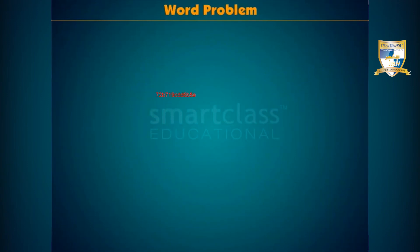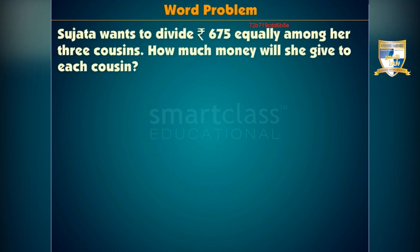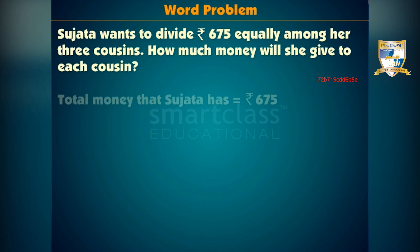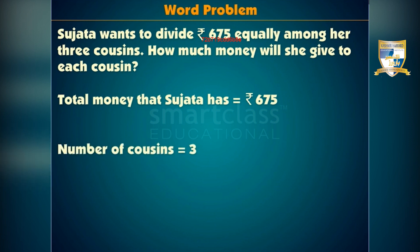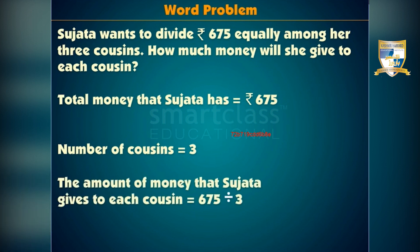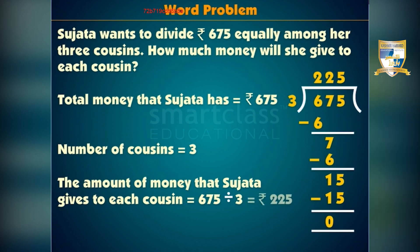Let's now solve a word problem involving division. Sujata wants to divide 675 rupees equally among her 3 cousins. How much money will she give to each cousin? Total money is 675 rupees and number of cousins is 3. So we divide 675 by 3. The amount each cousin receives is 675 ÷ 3 = 225 rupees.